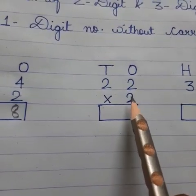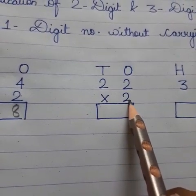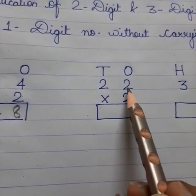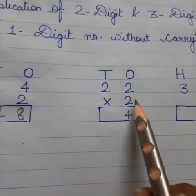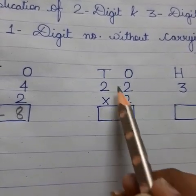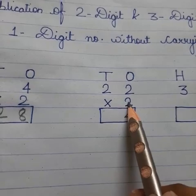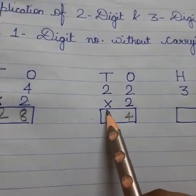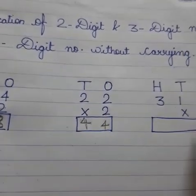Here, we read the table of 2: 2 one is 2, 2 twos are 4. We write 2. Now we read the table from the tens place: 2 one is 2, 2 twos are 4.